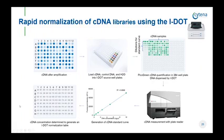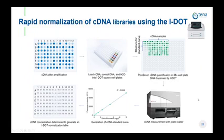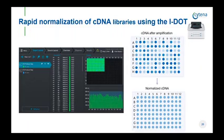The other example is normalization. To normalize DNA samples such as cDNA libraries, different volumes of buffer and DNA have to be dispensed for each sample. We did this by loading 96 samples onto an IDOT source plate and dispensing those for subsequent quantification using an intercalating dye on a plate imager — in this case a PicoGreen assay at reduced volumes. The results from the plate reader can be automatically translated to a CSV file or Excel table that can be loaded into IDOT Assay Studio within minutes, and the IDOT can then be set up to dispense and normalize 96 cDNA libraries in parallel.